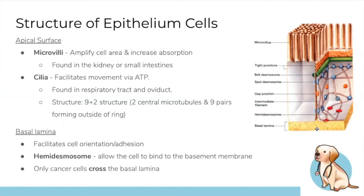At the basal surface, there's the basal lamina, which holds the cell in place via hemidesmosomes. Importantly, cells should always sit on top of the basal lamina and never cross it. The only exception is cancer cells — because beneath the basal lamina is a rich vascular supply, cancer cells cross it to access that blood supply and spread around the body.